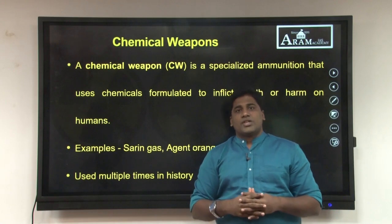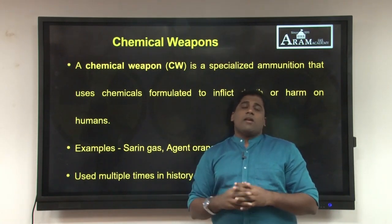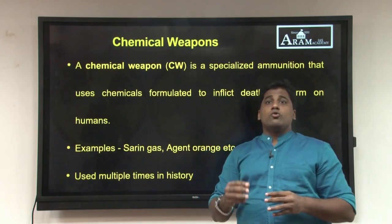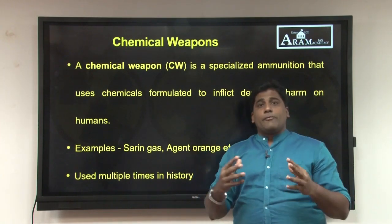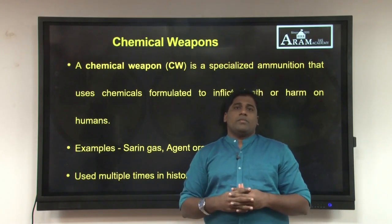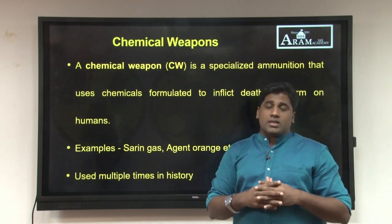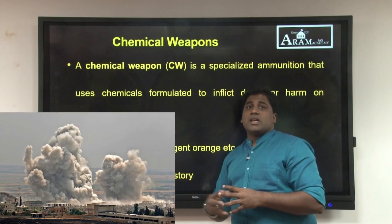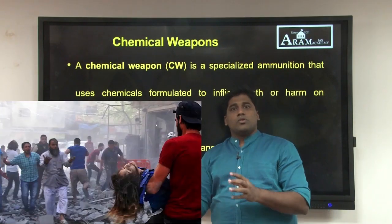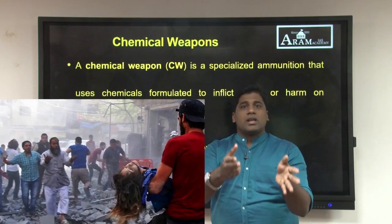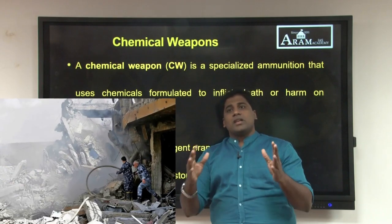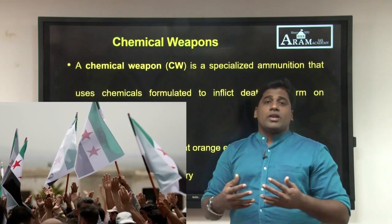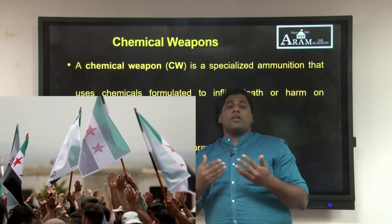The second weapon of mass destruction is the chemical weapon. Chemical weapons are even used today. About 5 to 6 years ago, Syrian President Bashar al-Assad used sarin gas against people who were fighting against the Syrian government for pro-democracy. The Syrian government is not a democratic government, so certain revolutionaries started to fight against the Syrian government for democracy.